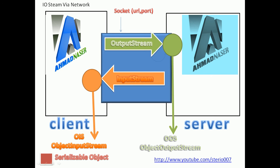The same rule applies when we're talking about IO stream via network — we're talking about sockets here. We have a URL like localhost or an IP address such as 192.168.1.xx, and we have the port. The port is the number of the service — for example, port 80 for HTTP. You can define any port you want, like 6000. First you need to define the socket — the blue box here — which is the connection between the client and the server.